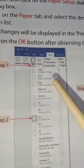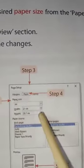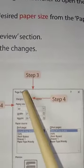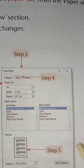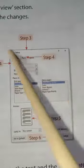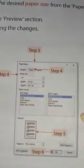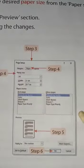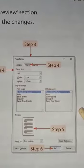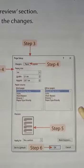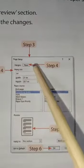You can also click the Page Setup dialog box launcher to open the Page Setup dialog box. This is the Page Setup dialog box. Click on the Paper tab and select the desired paper size from the Paper Size drop-down list.